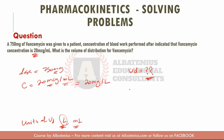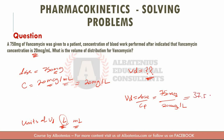From the equation provided, volume of distribution equals dose divided by the plasma concentration. My dose is 750 milligrams and my plasma concentration is 20 milligrams per liter. So the answer is 750 divided by 20, which equals 37.5 liters. It's as simple as that. You will get a lot of questions about volume of distribution — this is one of the most common question types on the test.